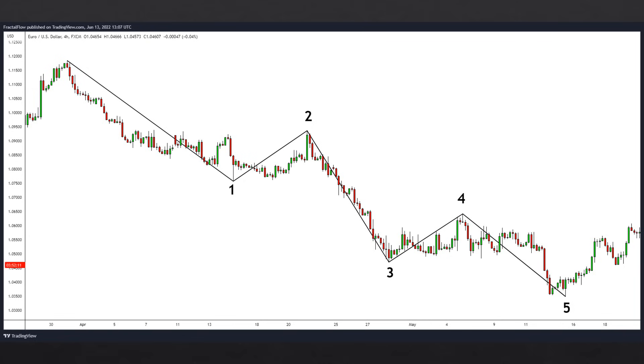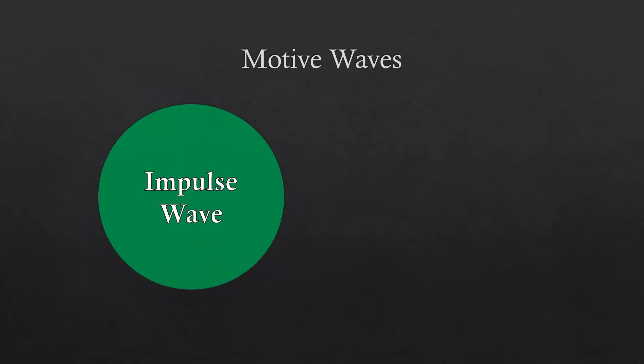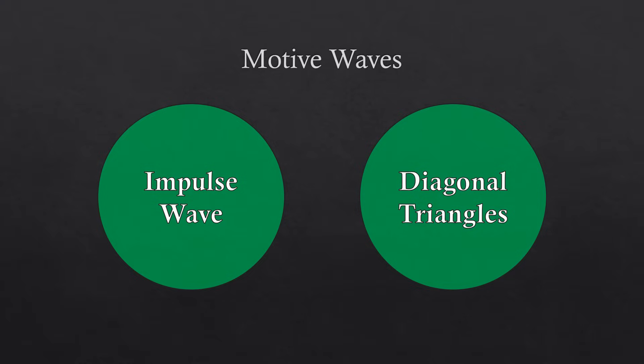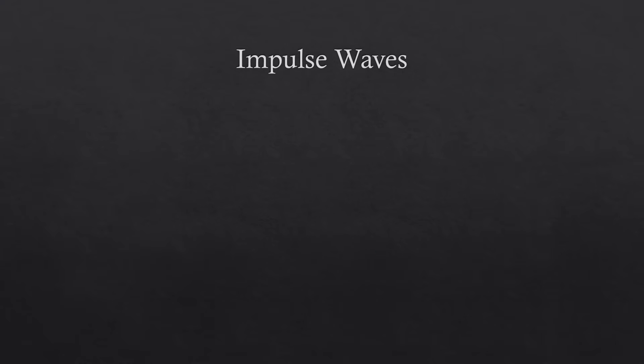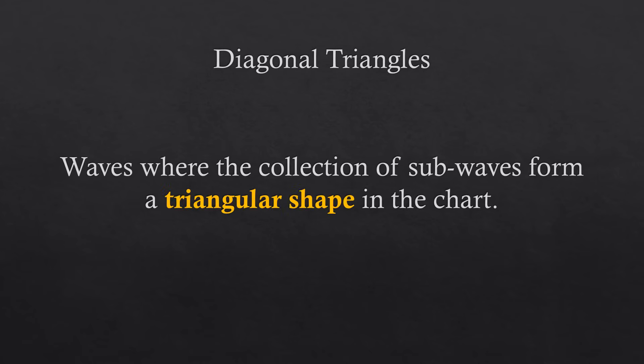There are mainly two types of motive waves: the impulse wave and the diagonal triangle. The impulse wave is the wave that goes in the same direction as the wave in the immediately larger degree — waves 1, 3, 5, A, and C are impulse waves, while waves 2, 4, and B are corrective waves. Diagonal triangles are a particular type of impulse wave where the collection of subwaves forms a triangular shape in the chart. There are two variations: the leading diagonal and the ending diagonal.